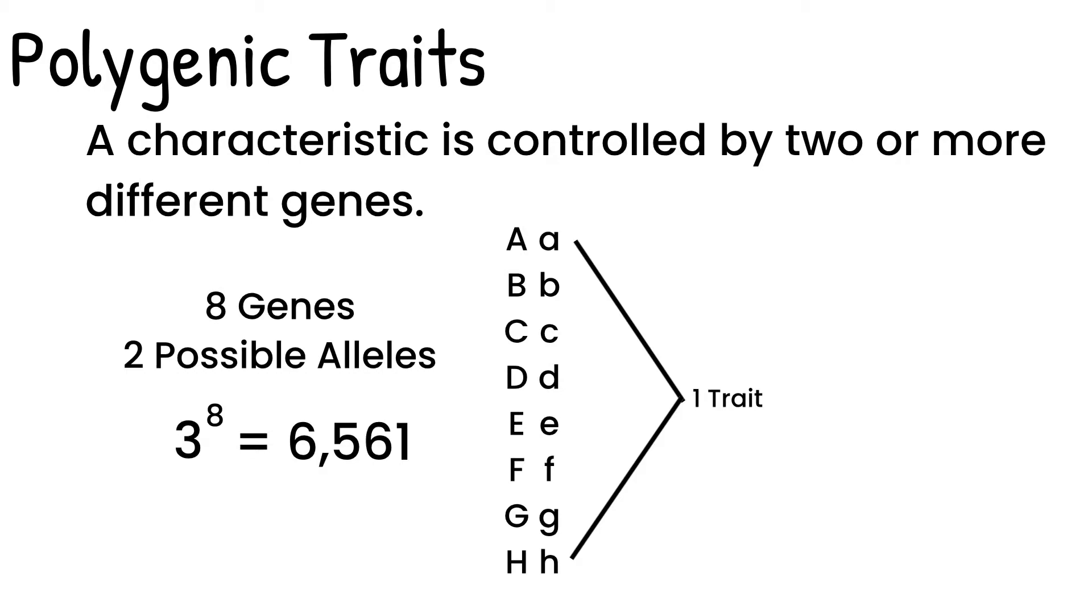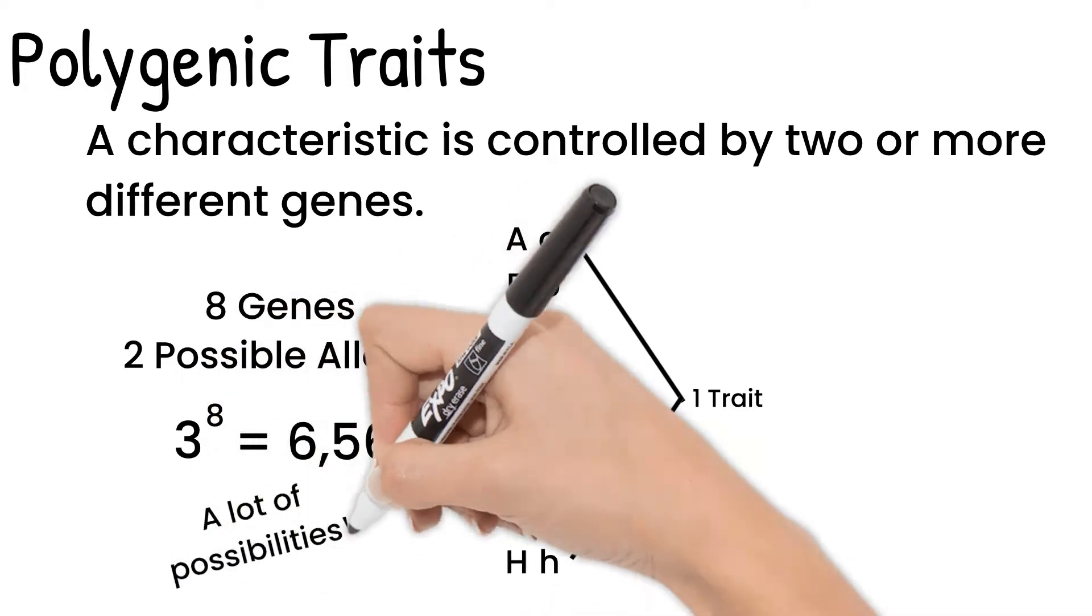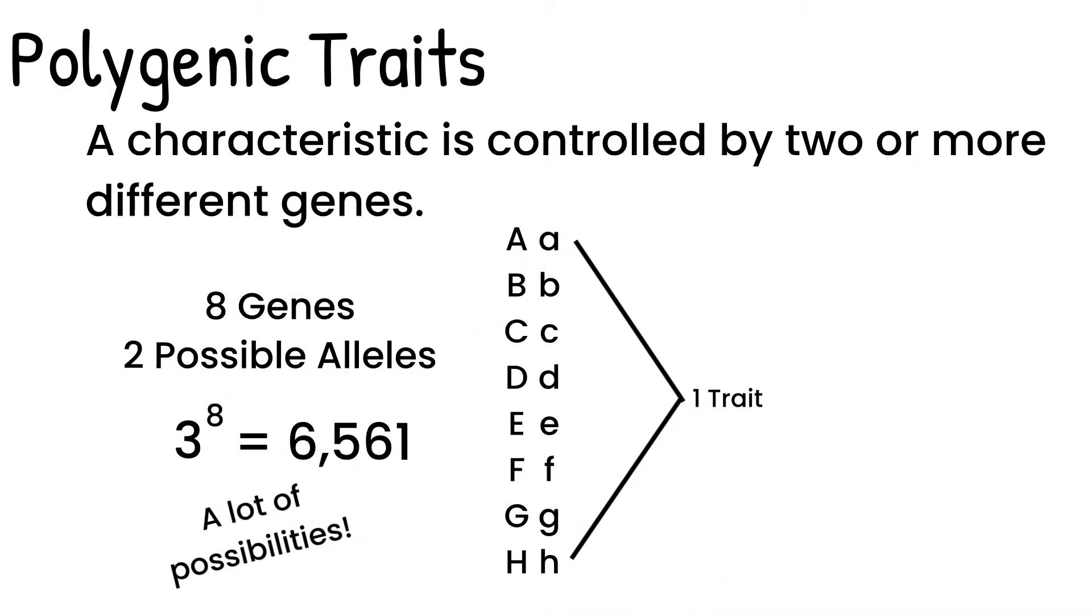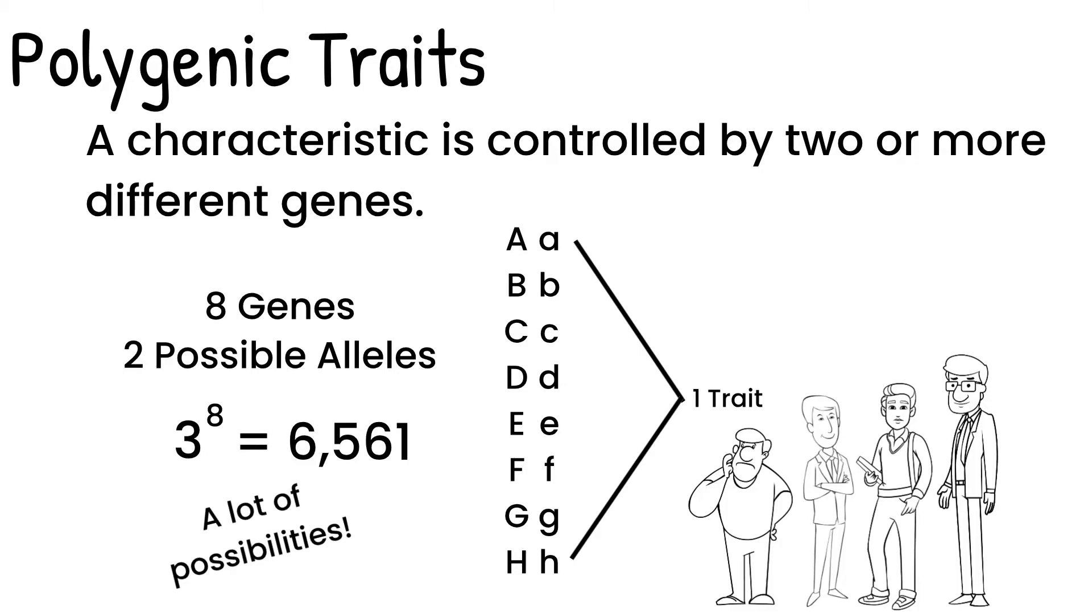If each of those genotypes has a unique phenotype, that creates a lot of possibilities. A good example of a polygenic trait is height. There are not just two or three set adult heights in humans. There is a wide range possible because there are different genes influencing it.